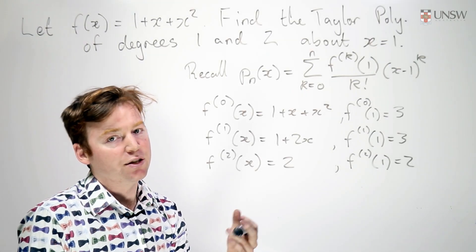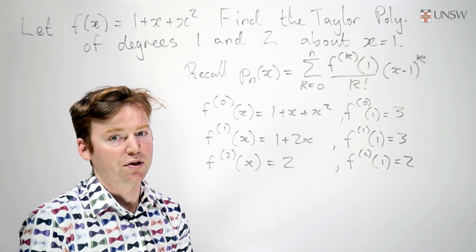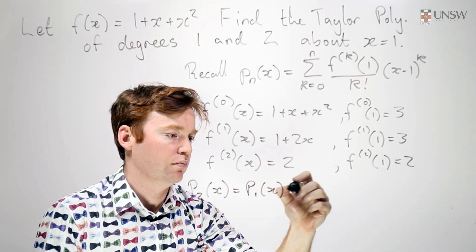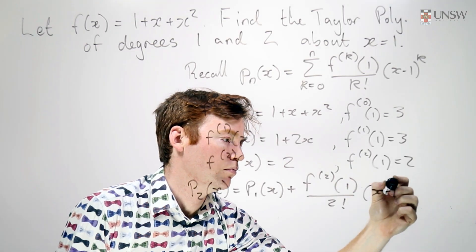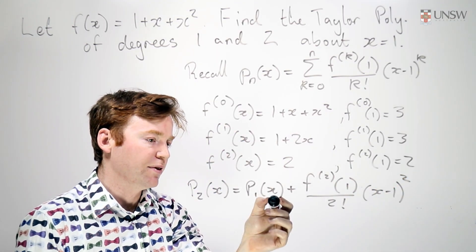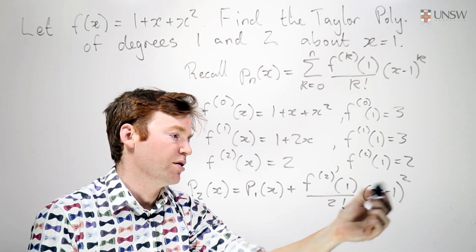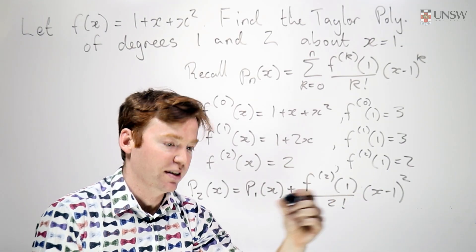Now I can take the degree 2 Taylor polynomial by just adding the next term onto my degree 1 Taylor polynomial. And this is something we've computed earlier. This here is just 2 divided by 2 times x minus 1 squared, so it's just x minus 1 squared is all we get left with.